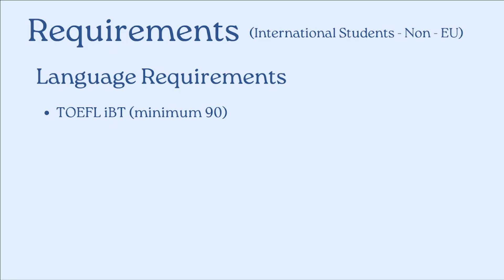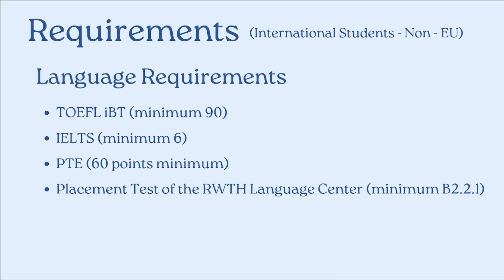Now let's have a look at the language requirements. These can be fulfilled with one of the following certificates. For TOEFL iBT, you must score at least 90 points. The IELTS minimum score is 6.0 overall. You can also fulfill the English language requirement through PTE with a minimum of 60 points, or by taking a placement test at the RWTH Aachen language center where you must achieve a minimum of B2.2.1.